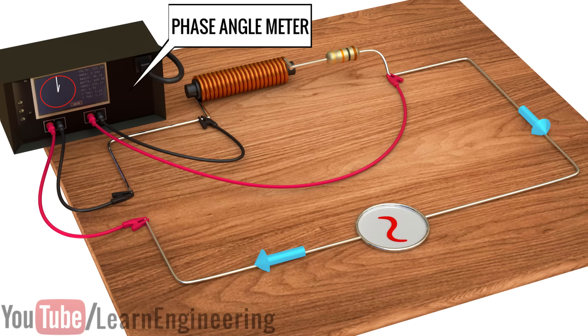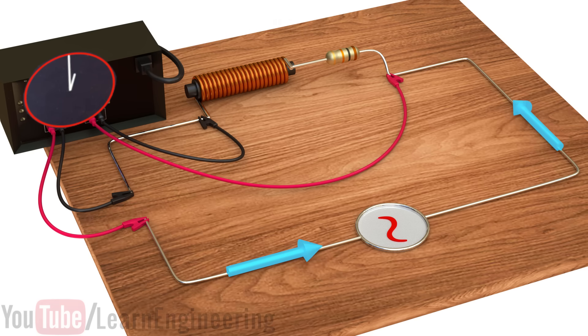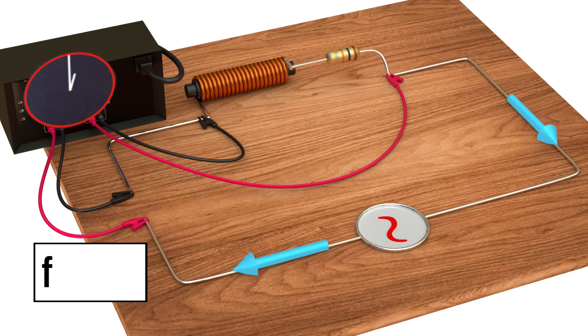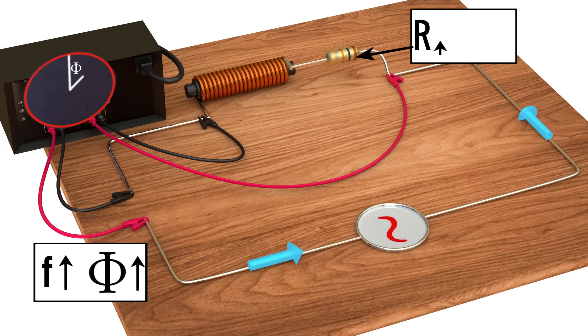Let us connect a phase angle meter to the circuit, to measure the phase difference between the applied voltage and the current. You can see that the current flowing through the circuit is not in phase with the applied voltage. This is because of the presence of an inductive reactance in the circuit. The higher the frequency of the electricity, the greater will be the inductive reactance and the phase difference. A higher resistance value reduces this phase difference.